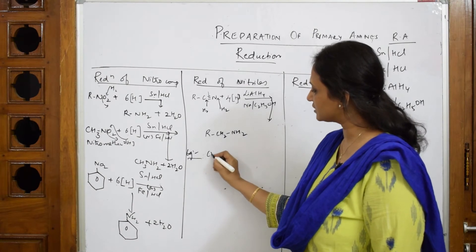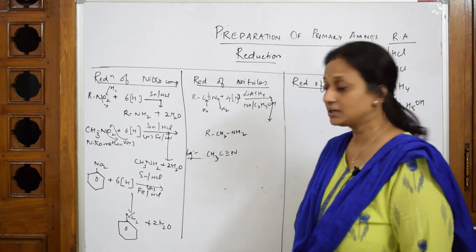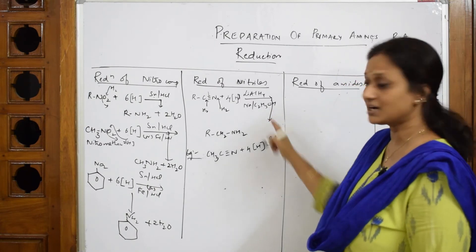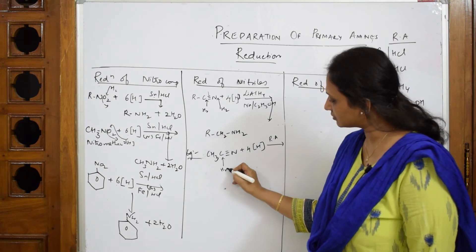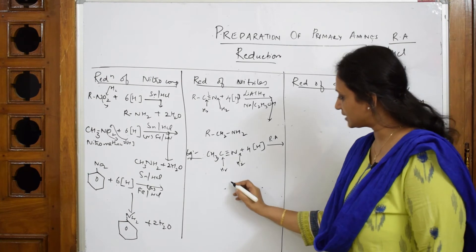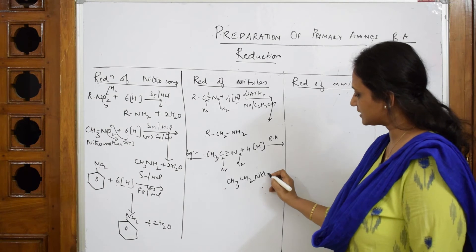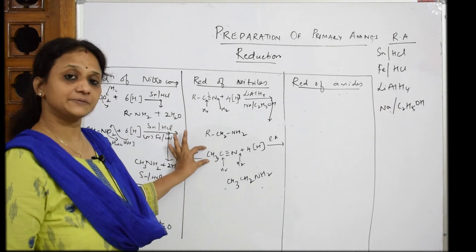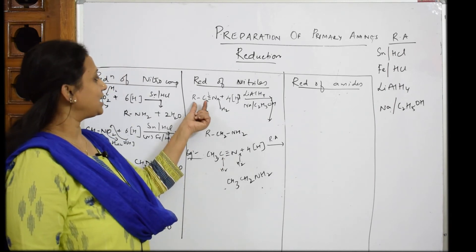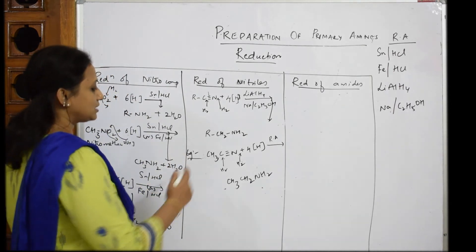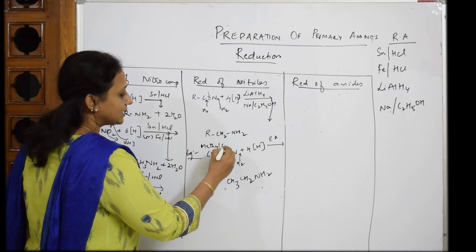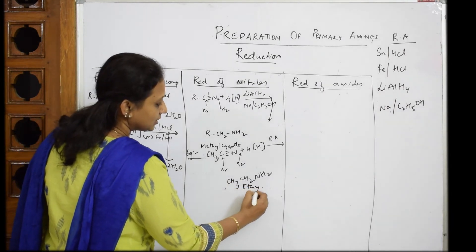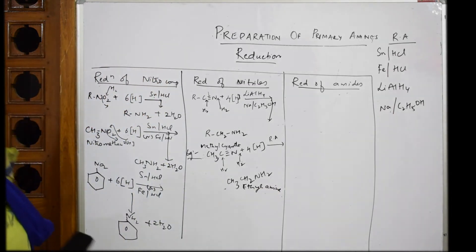For an example, take CH₃-C≡N (methyl cyanide). Add four hydrogens with a reducing agent. Two hydrogens add to the carbon and two add to the nitrogen. The product is CH₃-CH₂-NH₂. This compound is methyl cyanide (alkyl cyanide). The product has two carbons, so this is ethylamine — a primary amine. One carbon higher comes from the CN group gaining hydrogens.